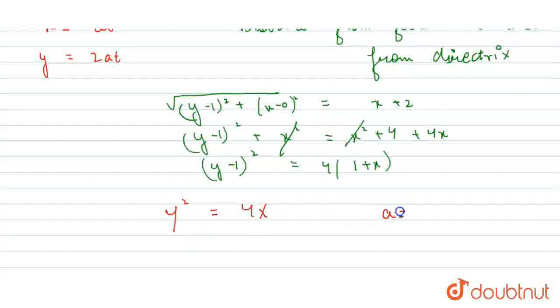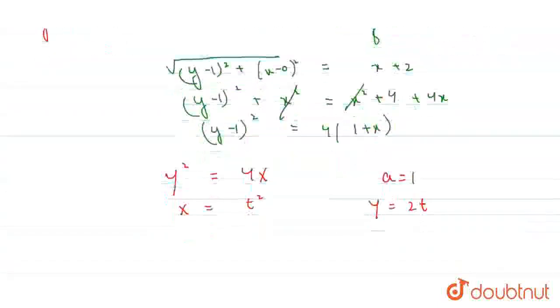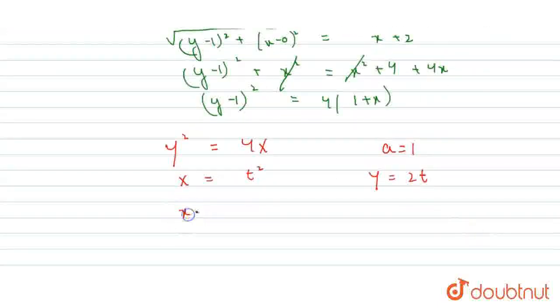Because a is equals to 1, so 4 into 1 into x is 4x and capital X equals to t square, capital Y equals to 2t. Now, put the value in the above equation. It will be x plus 1 equals to t square and y minus 1 equals to 2t.